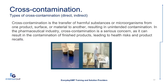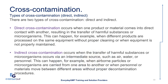Cross-contamination. Types of cross-contamination: direct and indirect. Cross-contamination is the transfer of harmful substances or microorganisms from one product, surface, or material to another, resulting in unintended contamination. In the pharmaceutical industry, cross-contamination is a serious concern, as it can result in the contamination of finished products, leading to health risks and product recalls. Direct cross-contamination occurs when one product or material comes into direct contact with another, resulting in the transfer of harmful substances or microorganisms. Indirect cross-contamination occurs when the transfer happens via an intermediate source, such as air, water, or personnel.